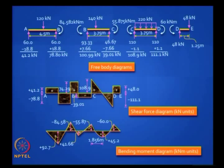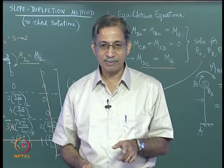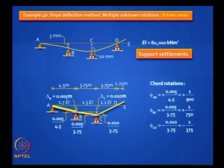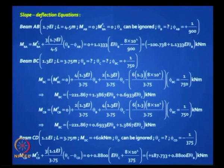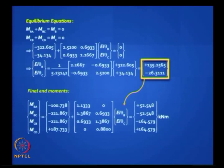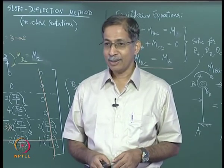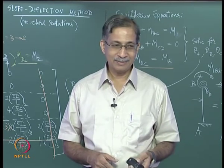To conclude, if you have a sway-type problem, you need to find the chord rotations. If delta B is 5 mm and delta C is 10 mm, AB rotates clockwise, BC rotates clockwise, and CD rotates anticlockwise — work out these known chord rotations first. Then plug them back into the slope deflection equations. You have the chord rotations but no fixed end moments from loads. Find the equilibrium equations and draw free body diagrams. We will stop here. You have an exam coming up — I wish you all the best.